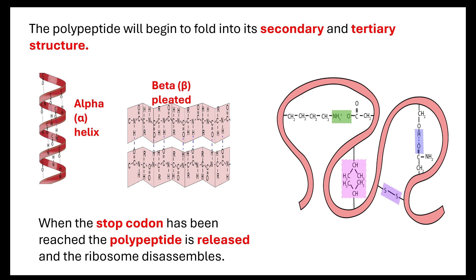When the stop codon is reached, then the polypeptide will be released and the ribosome will disassemble. Now, this can happen many times over depending on how many ribosomes are reading that mRNA strand, depending on how long that mRNA strand stays within the cytoplasm before it gets broken down.